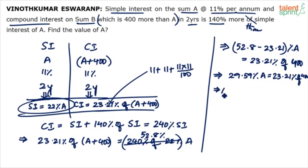So final the calculation should be this. I mean you can cut down a number of steps here. But 23.21 into 400 divided by 29.59. Simplify this and you get the answer.